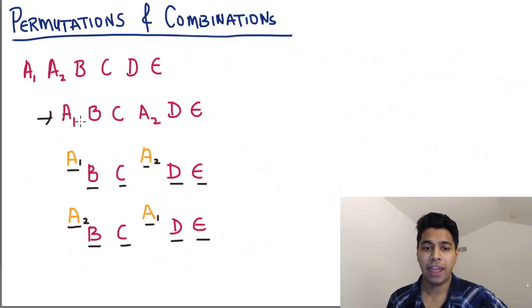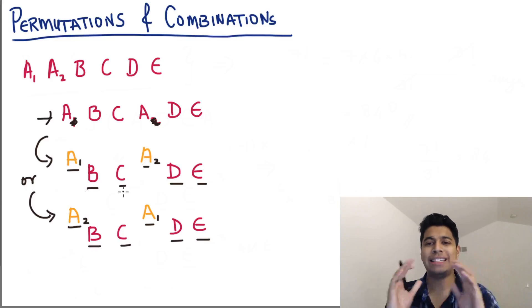Alright, so now A1, B, C, A2, D, E. Now let's forget about this. Let's forget about the numbers. Look at this, just this arrangement. You have A, B, C, A, D, E. Now this could be got either by doing this or by doing this. You could use the A1 and A2 or you could use the A2 and the A1, but they're all essentially a single arrangement. So what's happening here is because you have two As, you're getting two different arrangements which are actually duplicates.